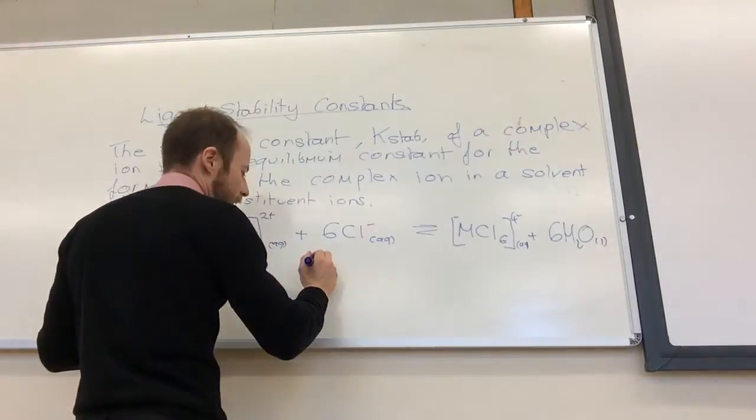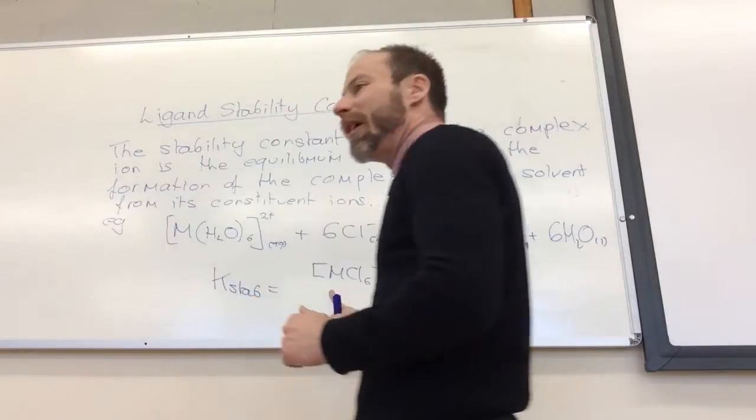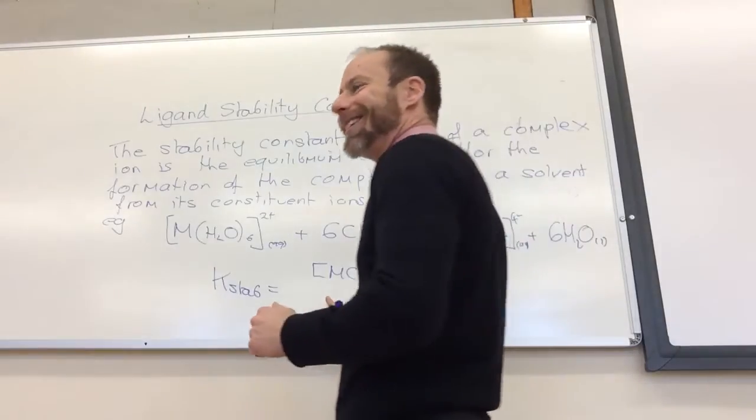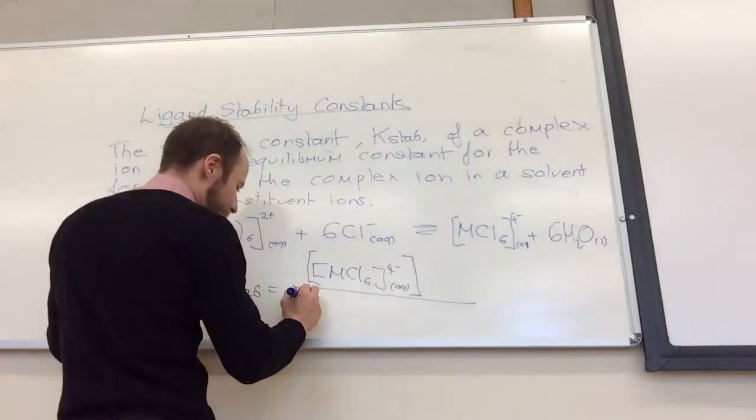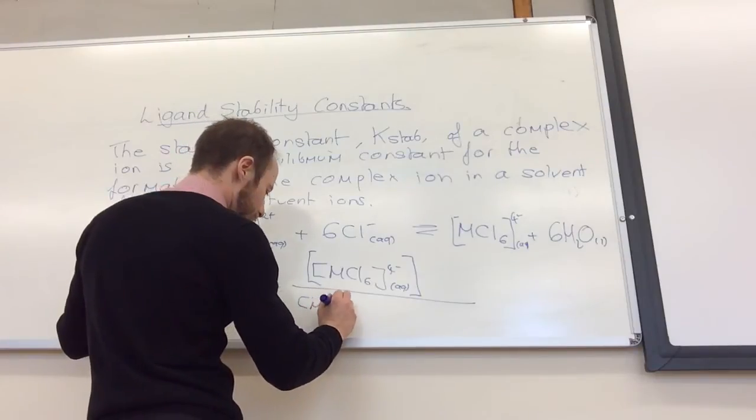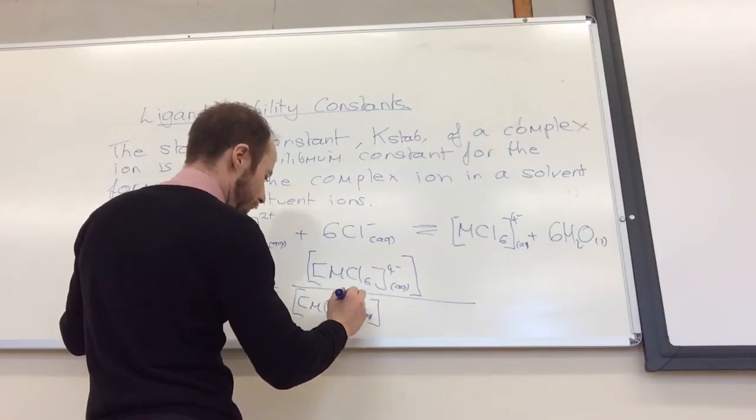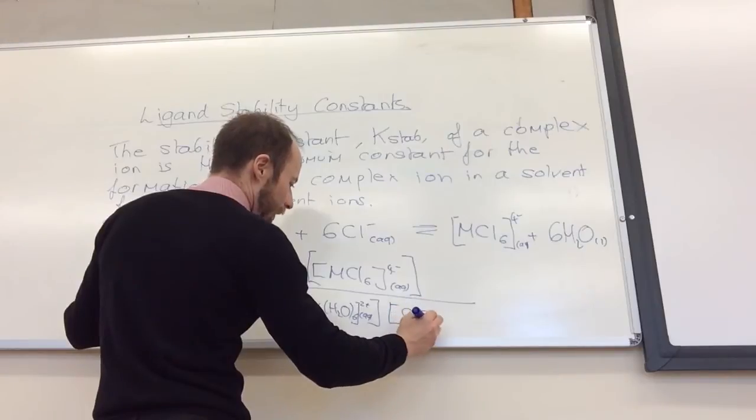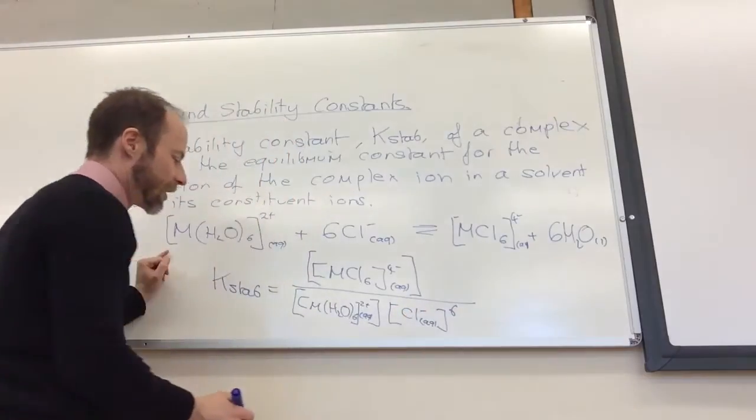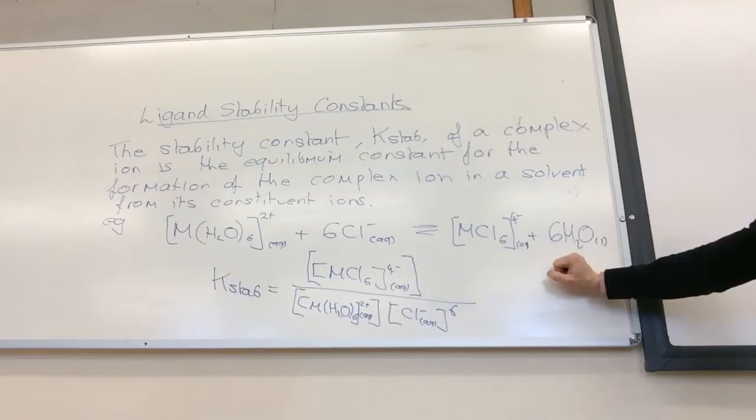So, kstab is your product, which is MCl6 to the minus 4, we're going to put them in square brackets, don't we, over this guy times, so it does get a little bit heavy on your square brackets, but the key thing is you've talked about, you know when you've talked about using kW, things like that, that you ignore water. So, you ignore that one there.